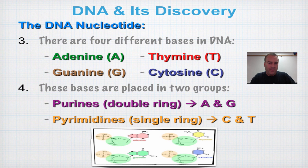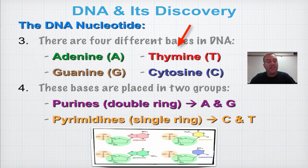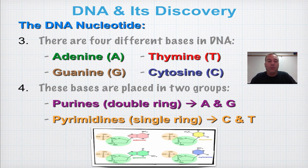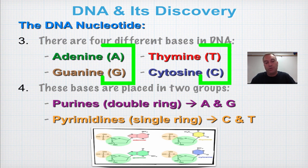There are four different types of nitrogenous bases found in a DNA nucleotide: adenine, guanine, thymine, and cytosine. Most of the time we're not going to write out the full names — that's just too many letters. We're just going to use A, T, G, and C.